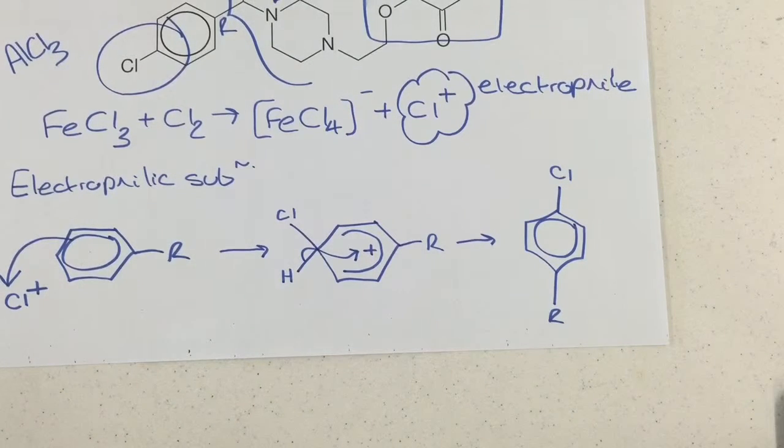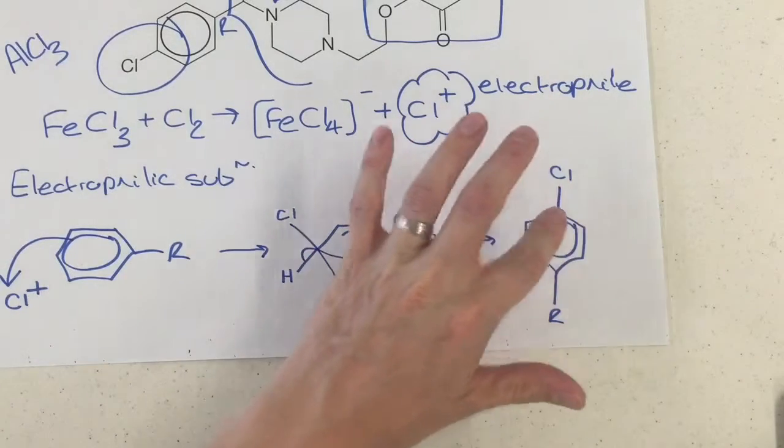And our aromaticity in the middle like so. So our delocalised ring of electrons there, our delocalised pi bond, is back inside the benzene.